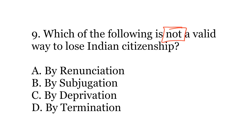The correct option is B. By subjugation. There is no such way in which Indian citizenship can be lost by subjugation. The other three categories are correct: renunciation means when a person voluntarily acquires citizenship of another country; deprivation means when the state deprives a citizen of citizenship; and termination means compulsory termination when the person has committed certain acts due to which his citizenship is terminated.